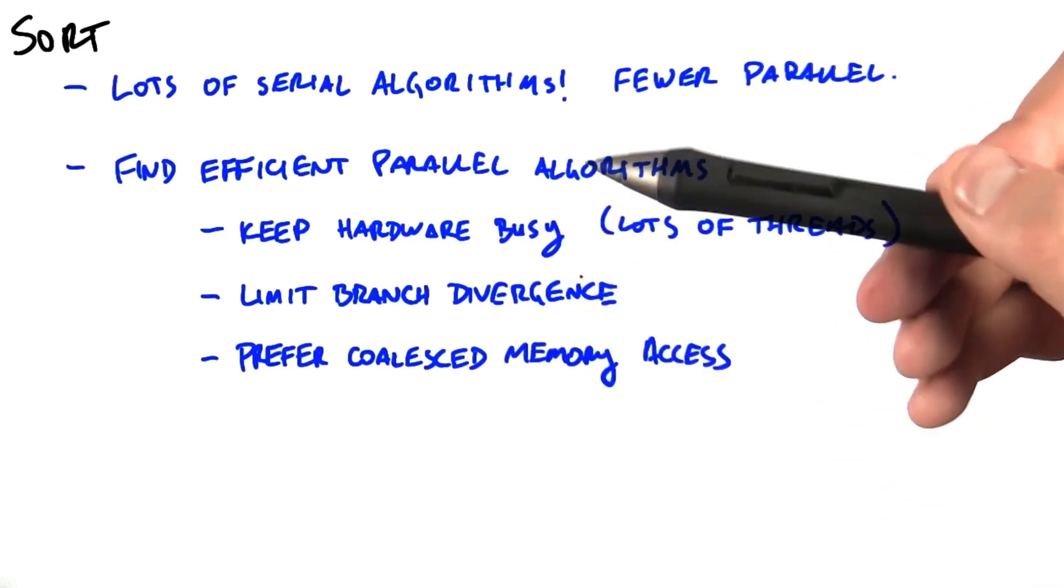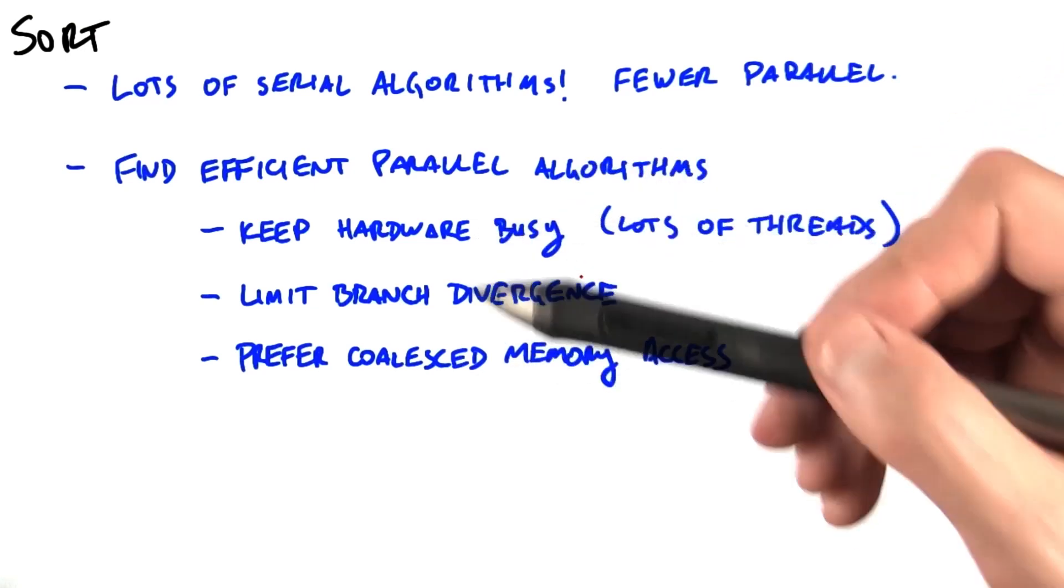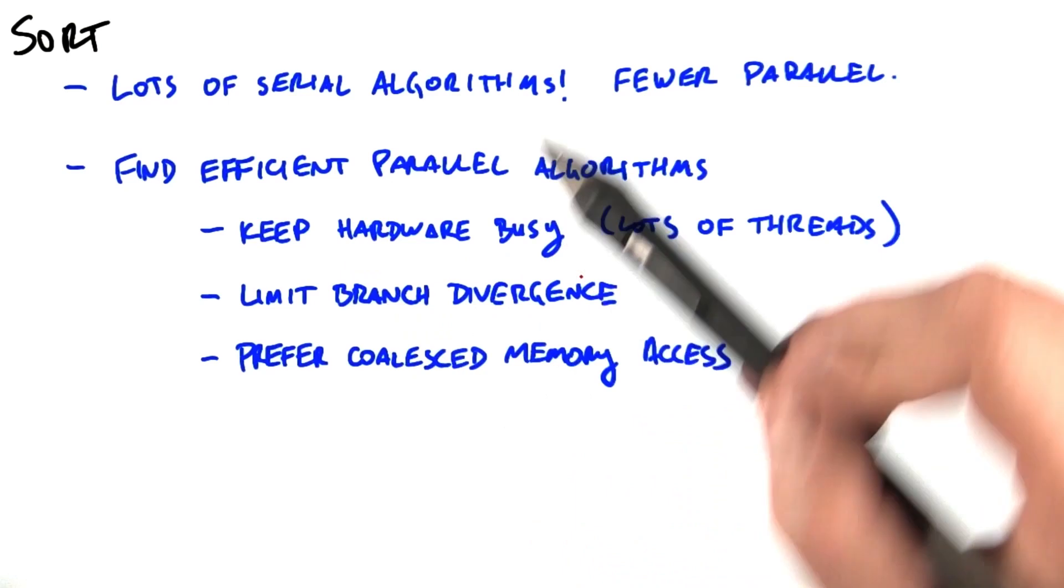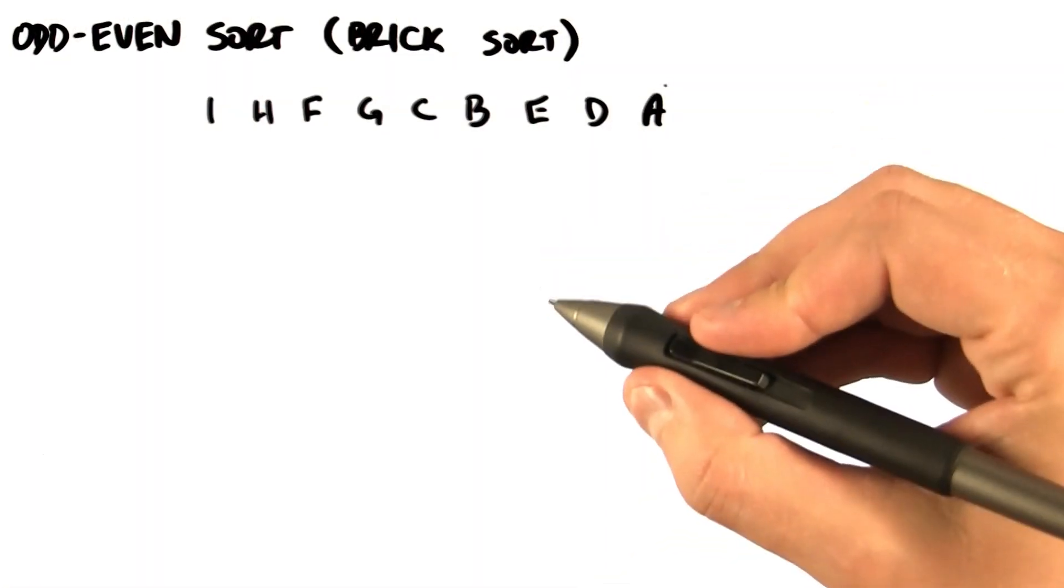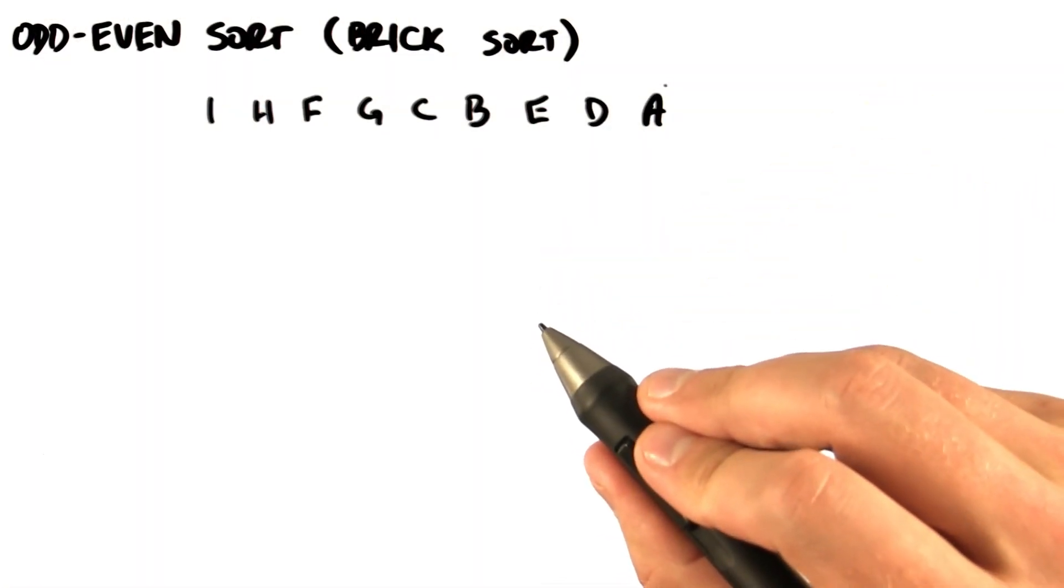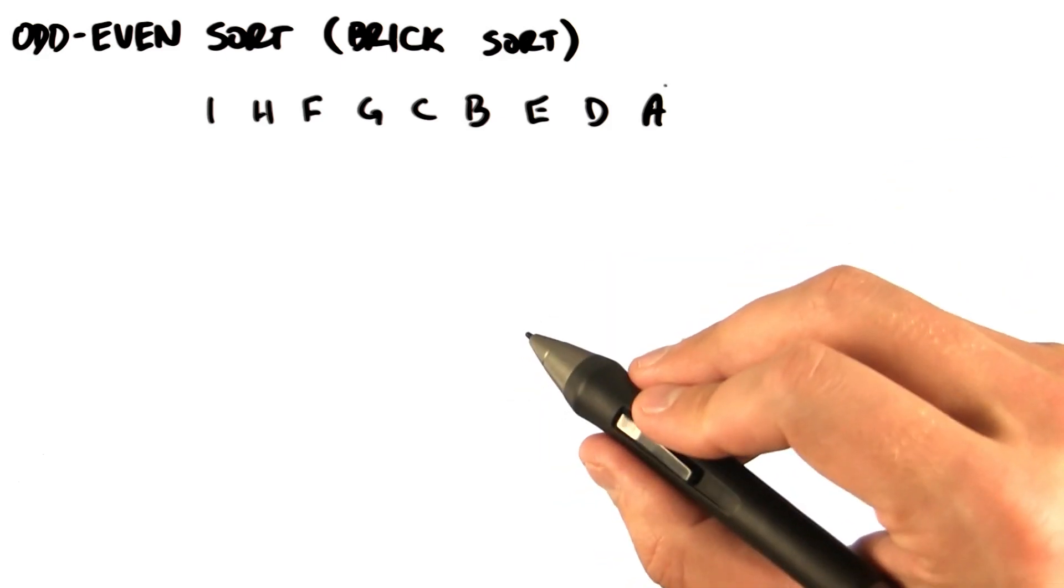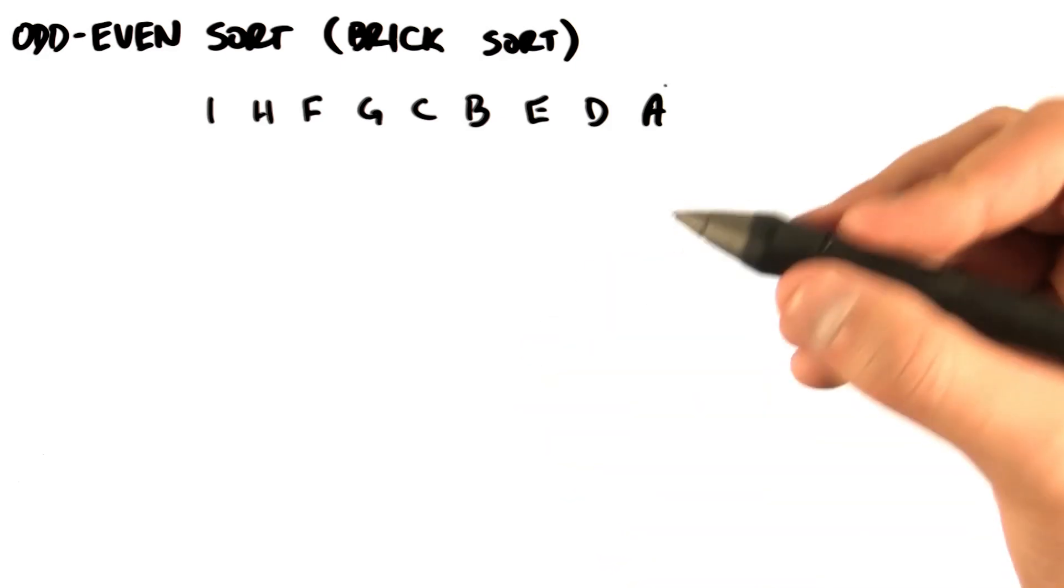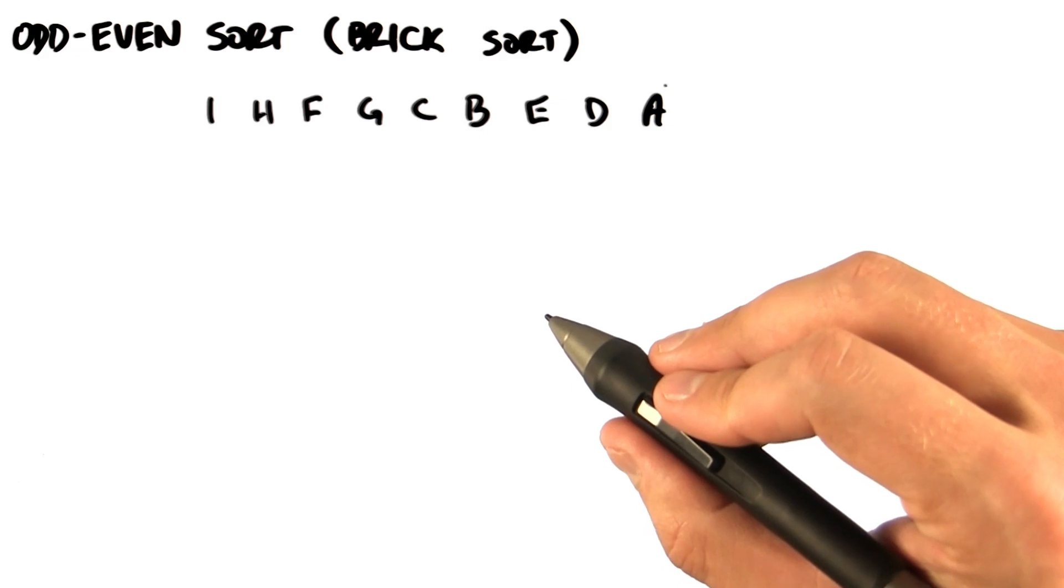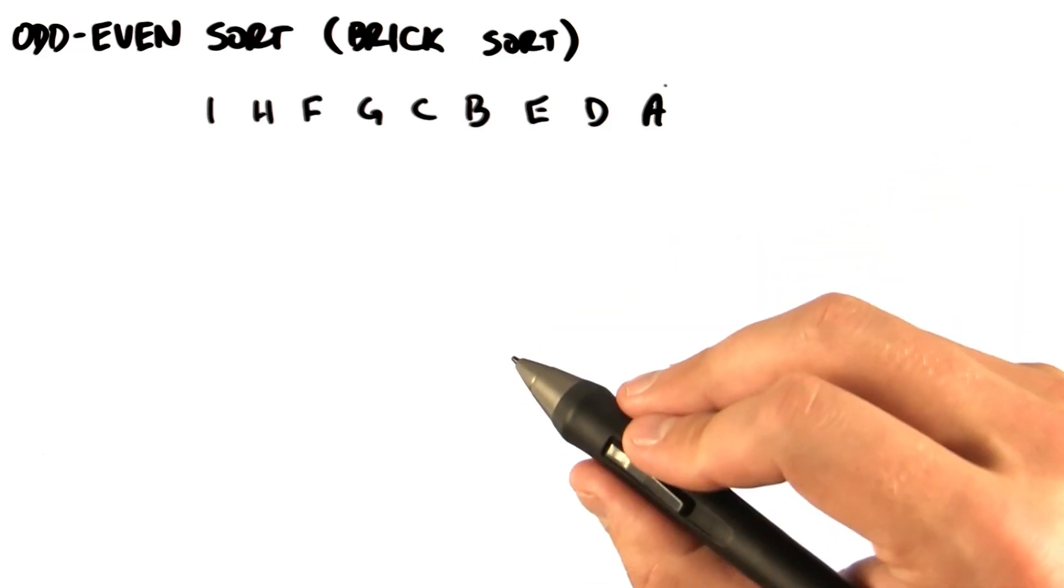And so what we're going to do is look at some classic sorting algorithms and discuss how they might map onto a parallel world. We'll start with one of the simplest algorithms, and one that maps nicely to a parallel implementation, odd-even sort, also known as brick sort. If you're familiar with the serial algorithm called bubble sort, this is the parallel version of bubble sort.